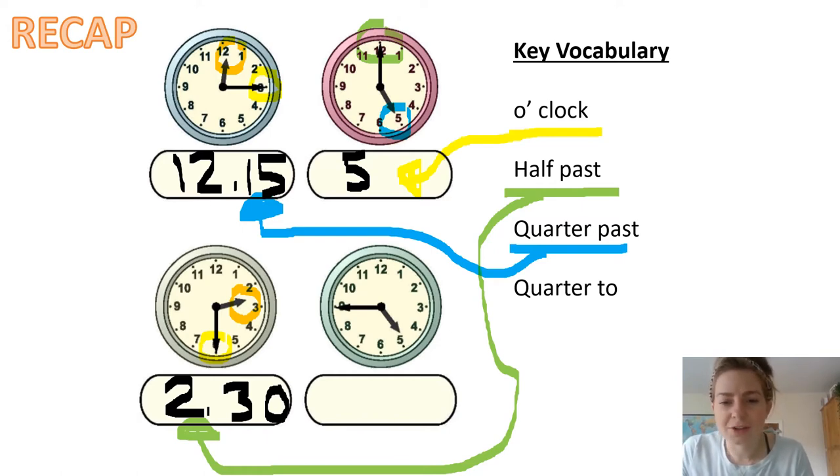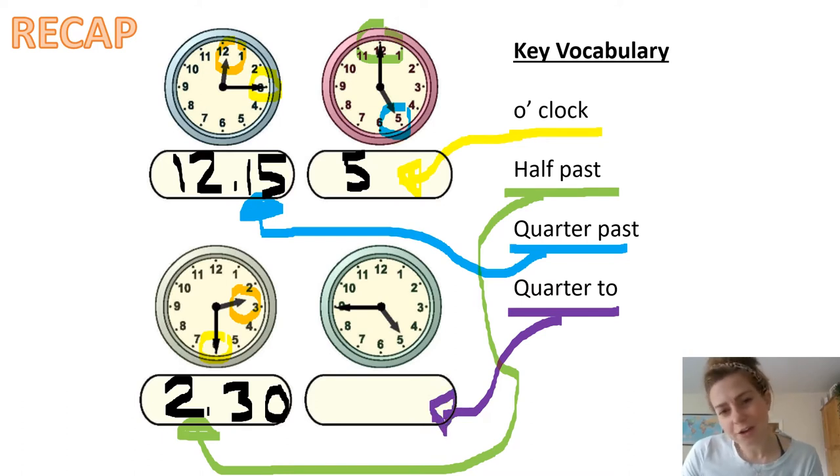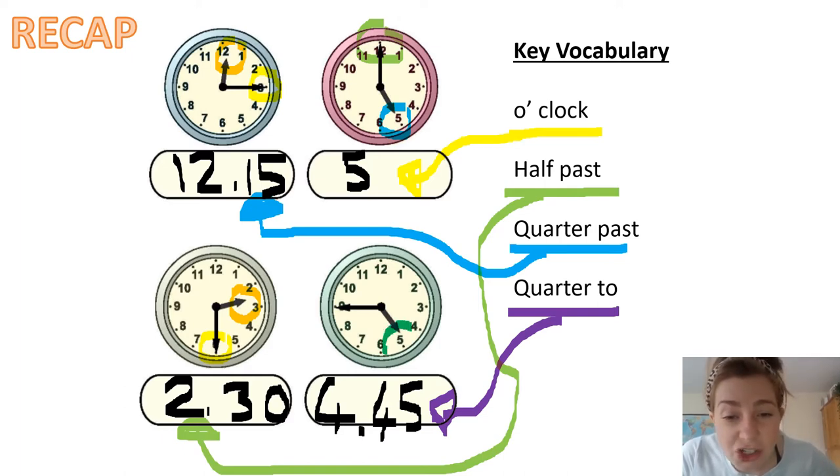And that means, of course, our last one, quarter to, has to go to the metallic green clock. And this time is quarter to five. Well done. So I actually have to write 4:45, so it's 45 minutes past four, what we'd usually say, of course, quarter to five. So you see the hour hand is just before the five, it's not quite at the five, it's just before, and the minute hand is on the nine, which means it's quarter to.